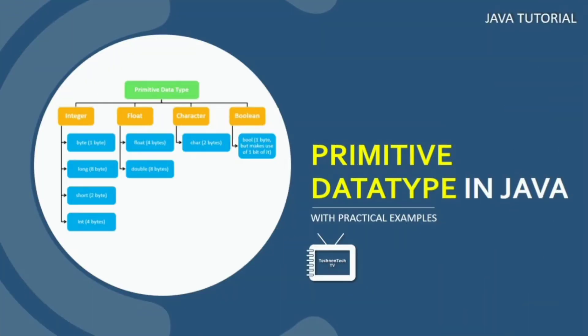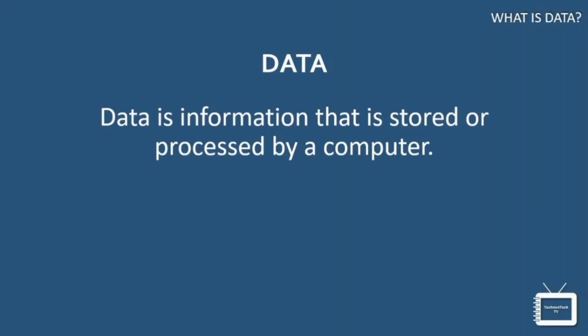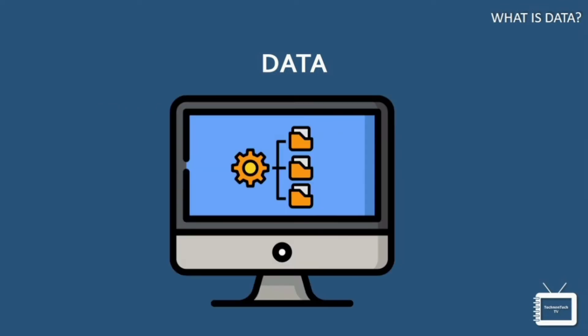Hi everyone, welcome back to Technon Tech TV. In this tutorial we're going to discuss different data types of Java with practical examples. So let's start. In computer science, data is information that is stored or processed by a computer.